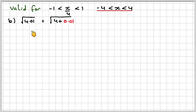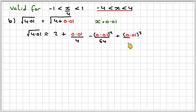For the square root of 4.01, we're going to write it as the square root of 4 plus 0.01. So in my expansion, I replace x with 0.01. So the square root will be approximately equal to 2 plus 0.01 over 4 minus 0.01 squared over 64 plus 0.01 cubed over 512.